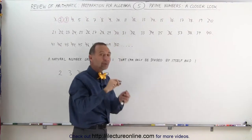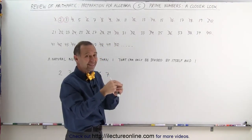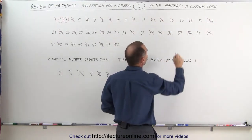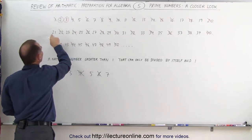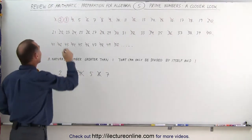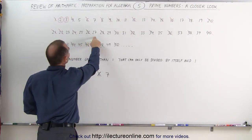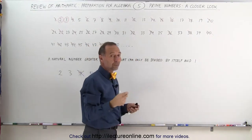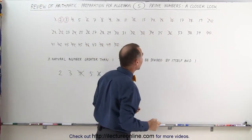How about 15? If I add the 1 and the 5 together, that gives me 6. 6 is divisible by 3, which means 15 is divisible by 3. How about 21? If I add the 2 and the 1 together, it gives me 3, which means 21 is divisible by 3. How about 33? 3 plus 3 is 6, and 6 can be divided by 3 — not a prime number.